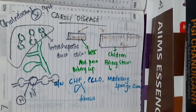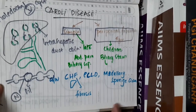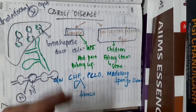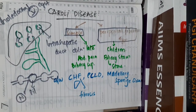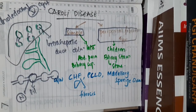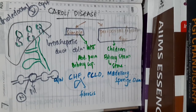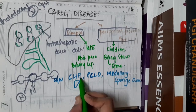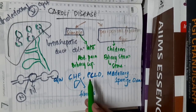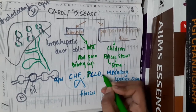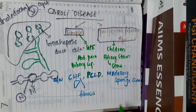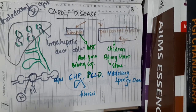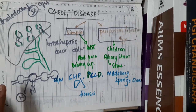The bile undergoes stasis and this results in formation of stones. Caroli's disease is associated with congenital hepatic fibrosis, polycystic liver disease, and medullary sponge disease.